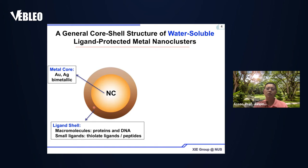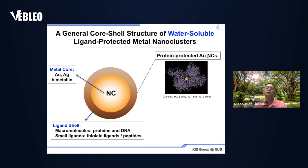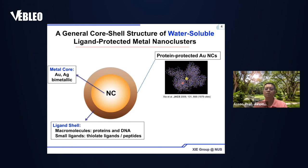My group is interested in two types of materials. The first is the protein-protected gold or silver nanocluster. Using a protein molecule like BSA (bovine serum albumin), we have developed a very efficient method that can selectively insert a certain amount of gold atoms inside these BSA molecules. This gold nanocluster shows very strong luminescence and can light up the protein. This fluorescent protein may find many applications.